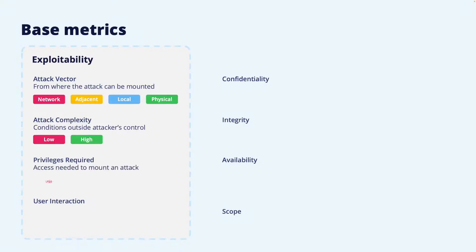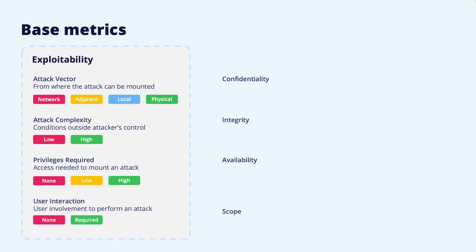Then we have a metric called privileges required, which describes what privileges an attacker must have before a successful attack can be mounted. If no privileges are required, the severity is considered higher. This spans from none, to low (typically normal use of privileges), to high (which can be seen as administrative privileges required). The last exploitability metric is user interaction, which specifies if a user must be involved and perform a certain action for the attack to succeed — such as clicking a link or executing a program. If no user interaction is required, the severity will be higher.